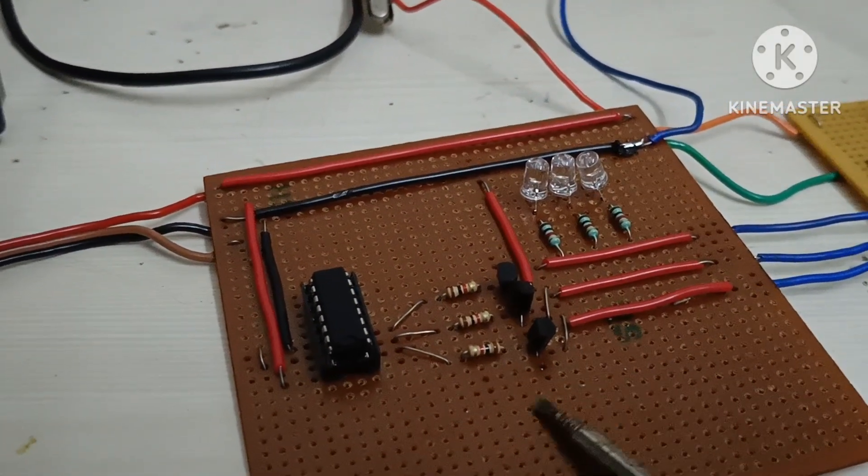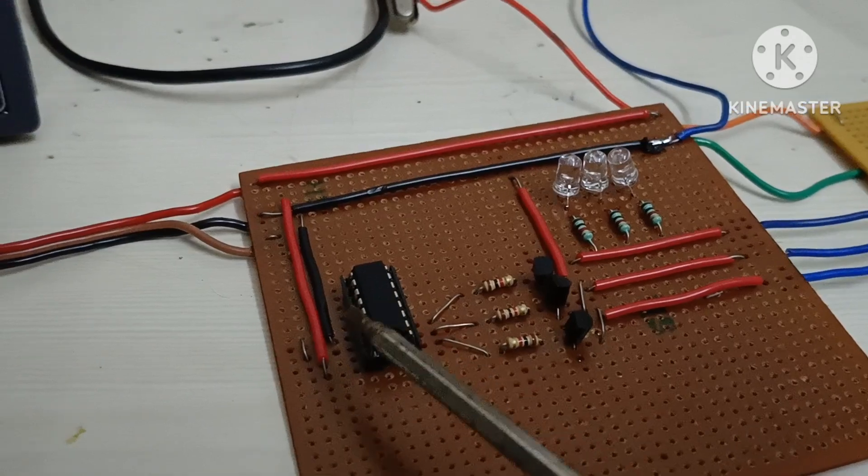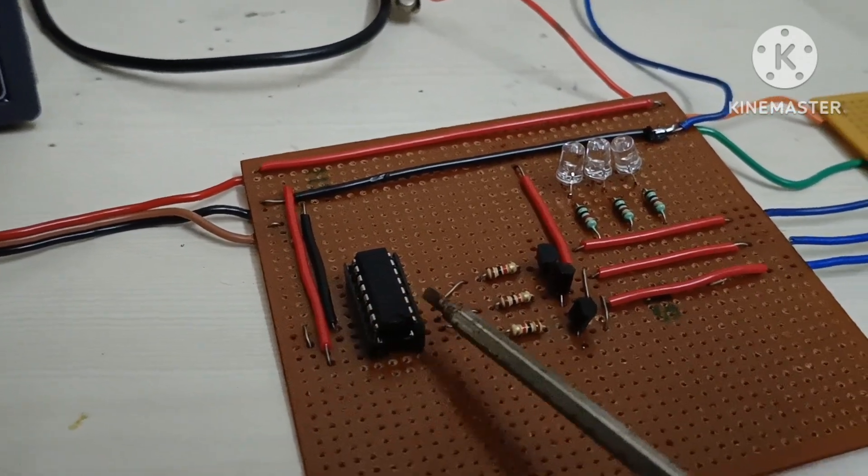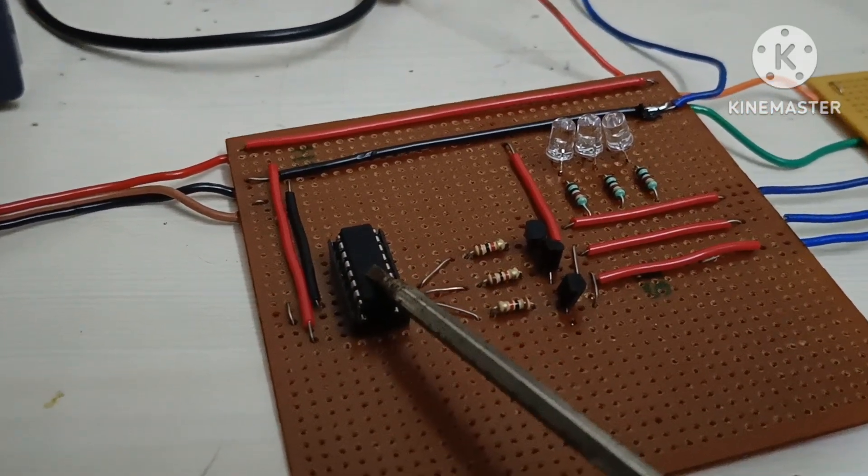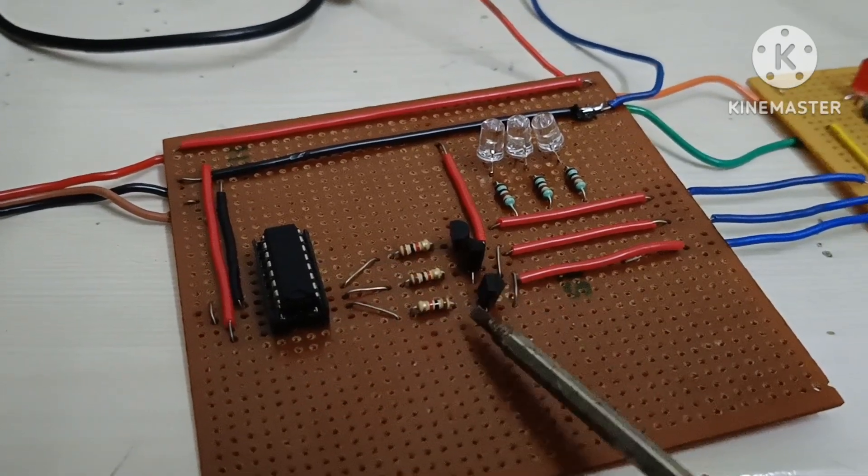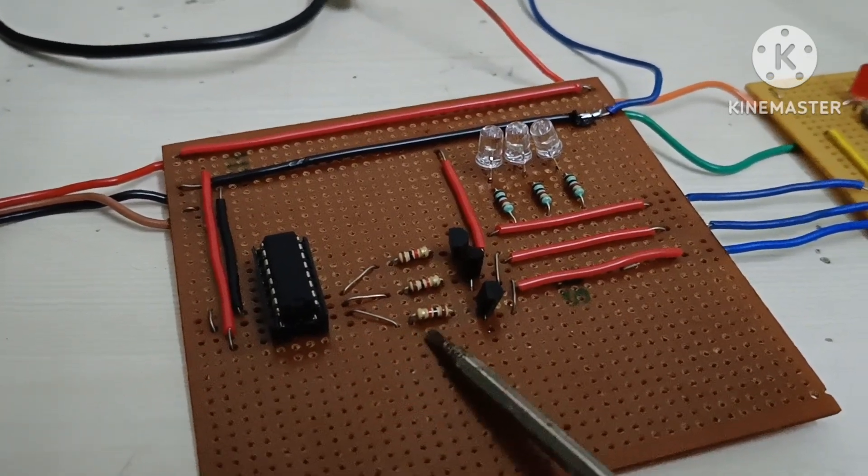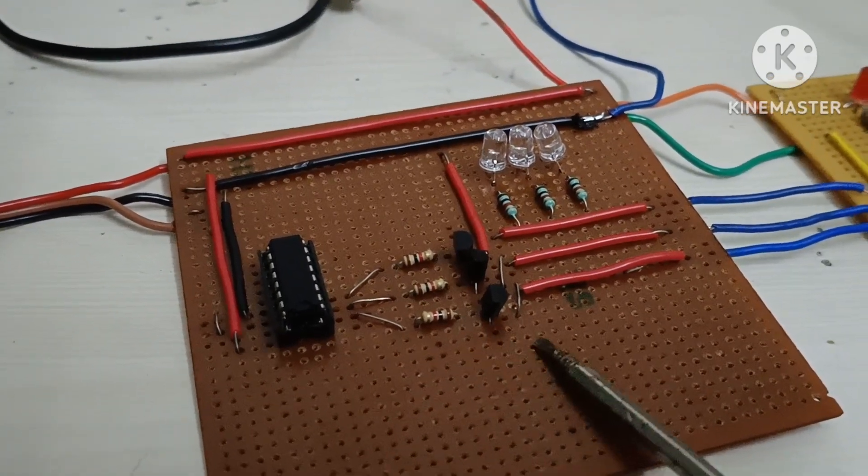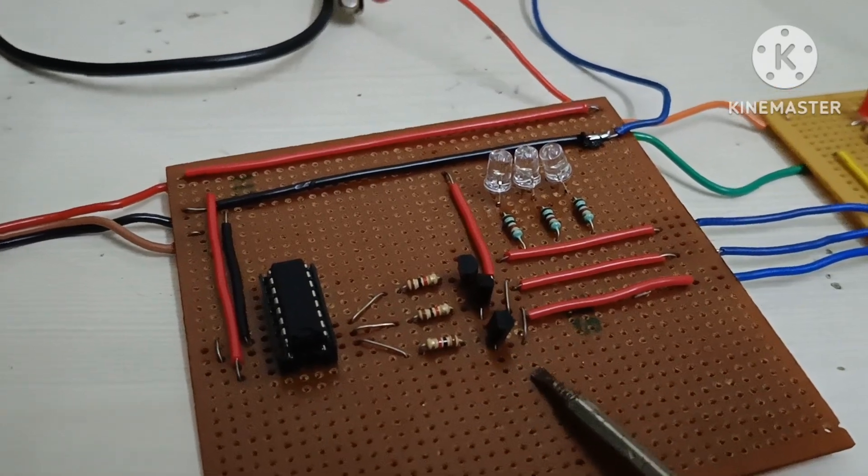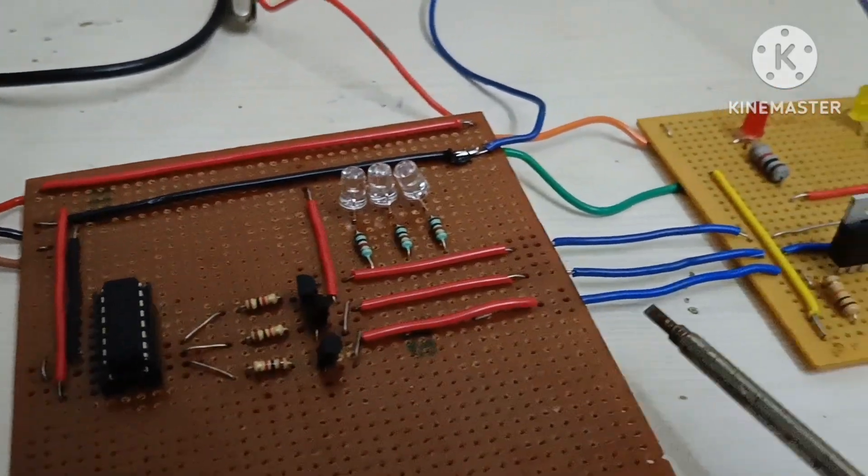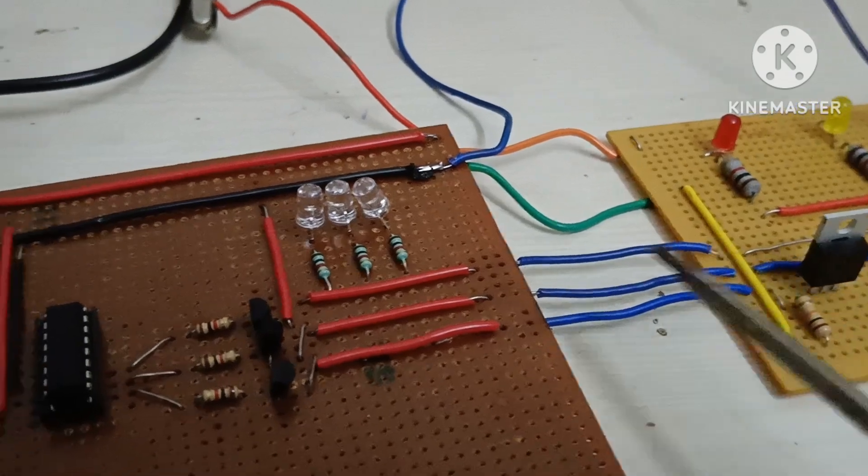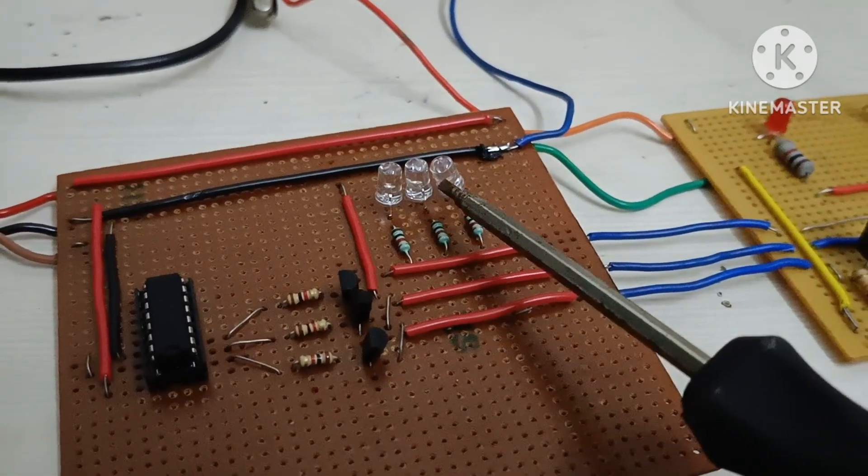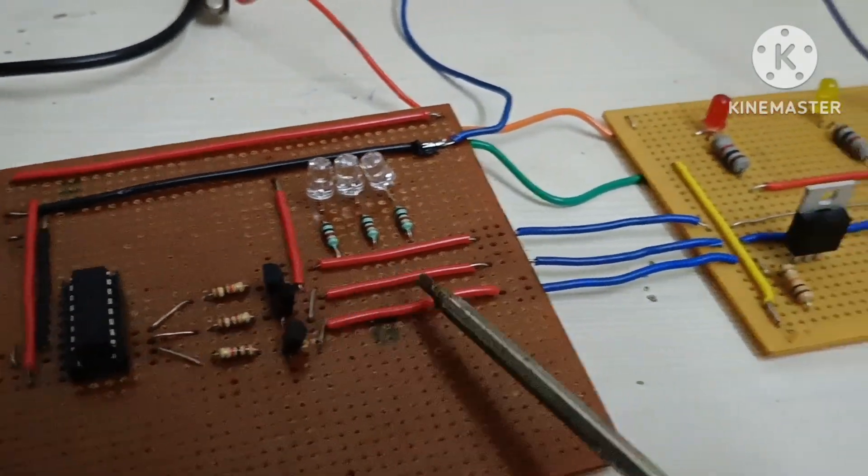Here the single phase signal is converted by using 4017 IC and it's given to the transistor 547, which is used to drive the MOSFET circuit. The three LEDs are useful to monitor the three phase signal.